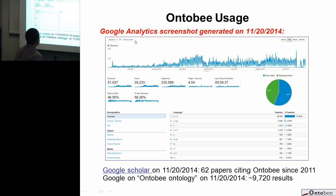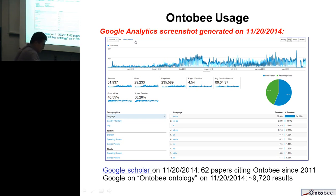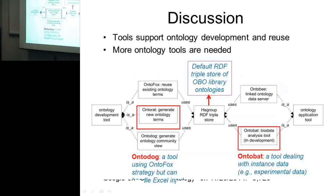In terms of usage, we routinely have about 100 IP addresses using OntoB daily. The server went down last month and people were calling me about it — it's fixed now. Many people are citing the ontology tools.